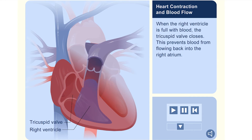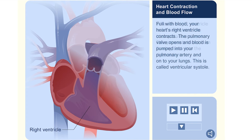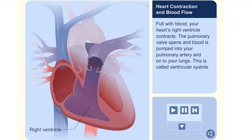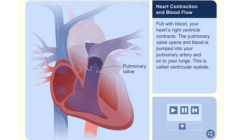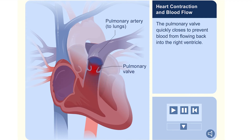When the right ventricle is full with blood, the tricuspid valve closes. This prevents blood from flowing back into the right atrium. Your heart's right ventricle contracts. The pulmonary valve opens and blood is pumped into your pulmonary artery and onto your lungs. This is called ventricular systole. The pulmonary valve quickly closes to prevent blood from flowing back into the right ventricle.